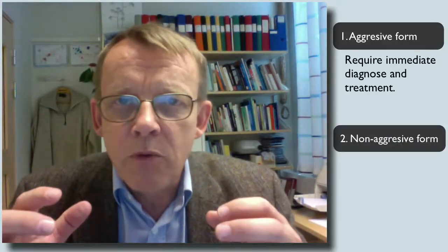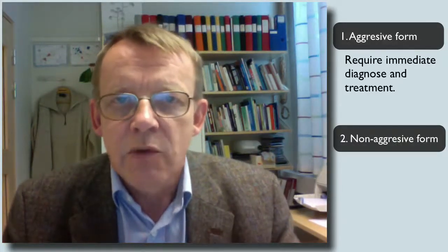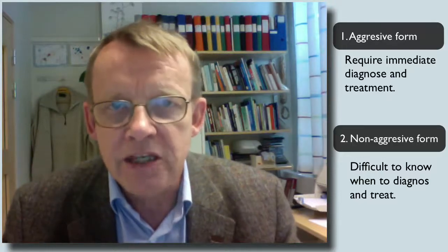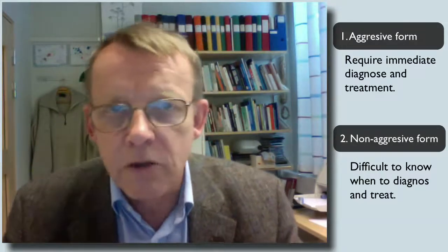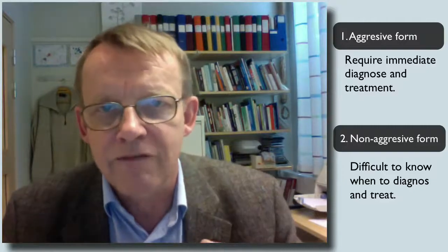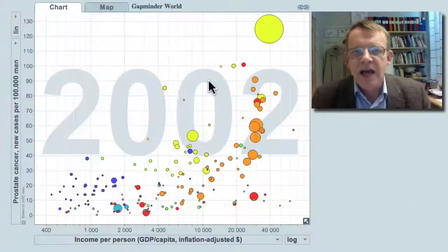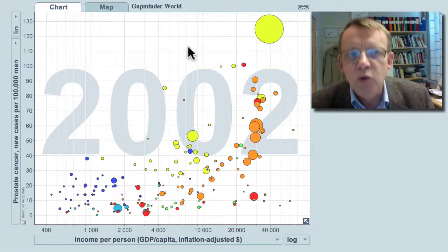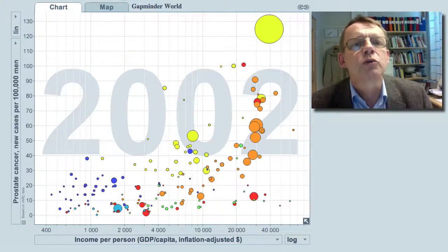There's another aspect also — this cancer exists in an aggressive form that requires immediate treatment, but also in more modest forms which are not really causing problems for the patient. It's difficult to know when to put the diagnosis and when to give the treatment. The high rates in the United States may be due to some overdiagnosis.